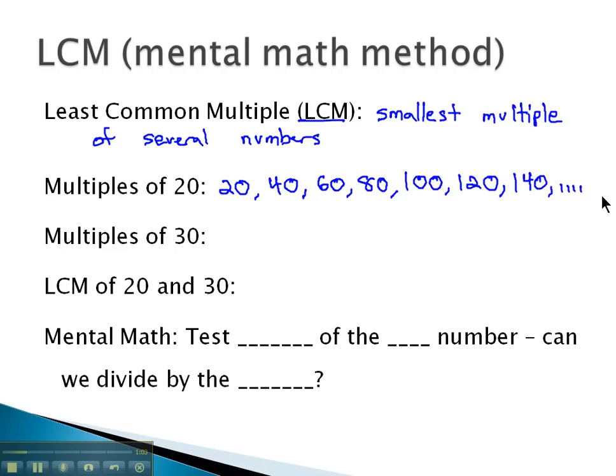Then we could also list up a bunch of multiples of 30. 30 times 1 is 30, 30 times 2 is 60, 30 times 3 is 90, 30 times 4 is 120, 30 times 5 is 150, and we could keep going with that.